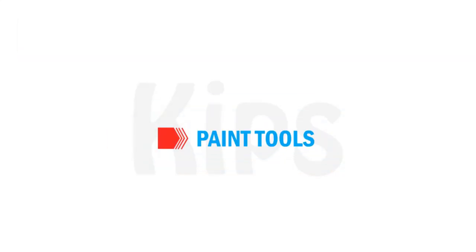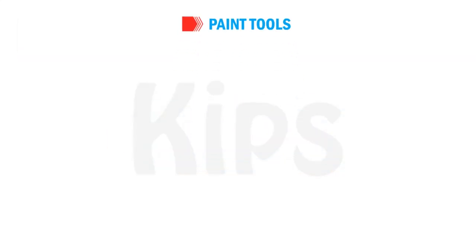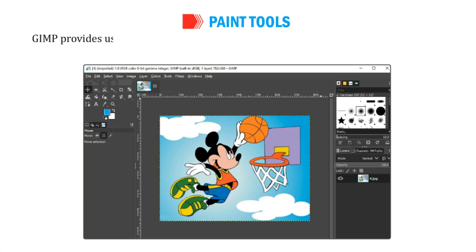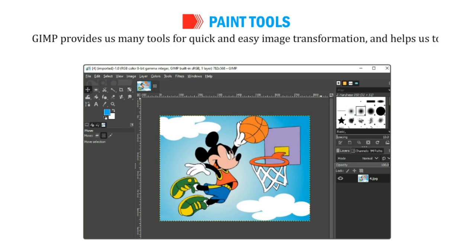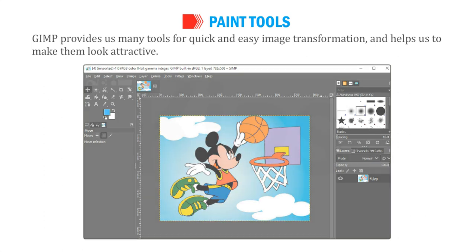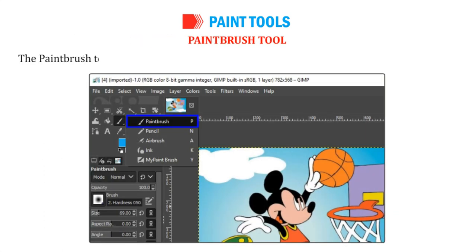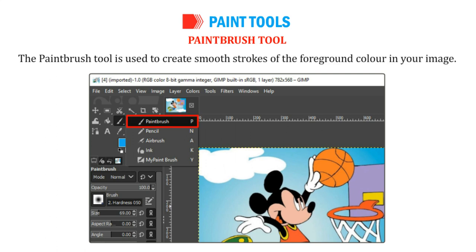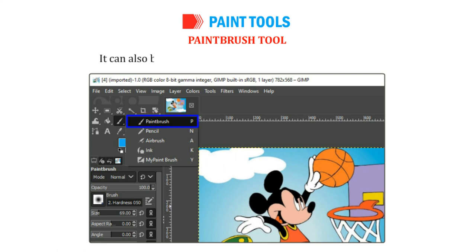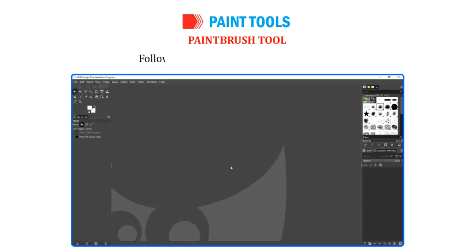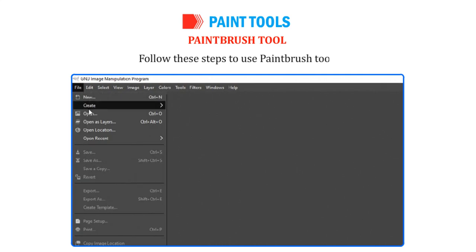Let us discuss about Paint tools. GIMP provides us many tools for quick and easy image transformation and helps us to make images look attractive. The Paint Brush Tool is used to create smooth strokes of the foreground color in your image. It can also be used to paint on images, selections or layers.